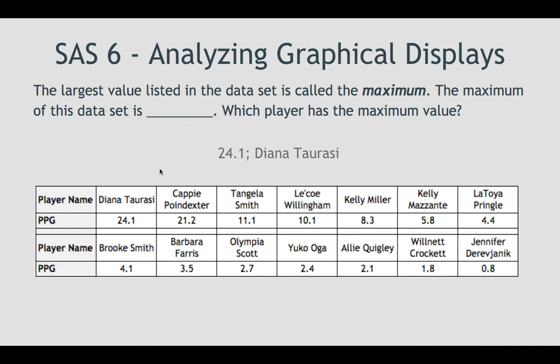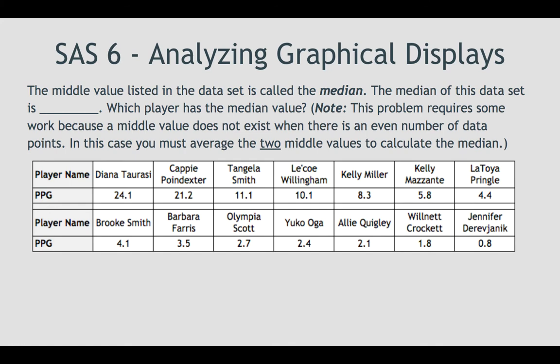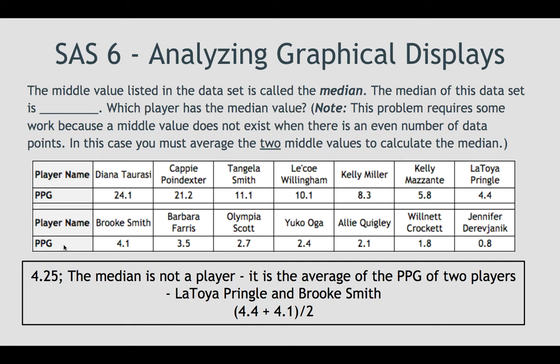The middle value listed in a data set is called the median. Now, this is very important to understand: if we have an even number of values, there is no middle number, so you must average the two middle values to calculate the median. In this case, there are 14 numbers, so we look at the seventh and eighth values — Latoya Pringle and Brooke Smith. Adding them together gives 8.5, divide by two, and we get 4.25 points per game. The median is not a player; it's the average of those two players.